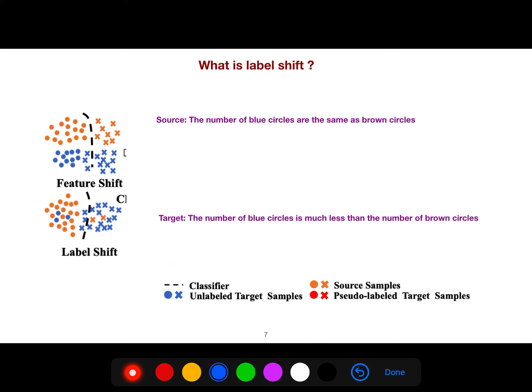But what is label shift? For example, in the source, the number of blue circles are the same as brown circles. But in the target, the number of blue circles is much less than the number of brown circles. Not only this, because also in the target, the label is totally changed. So it's a label shift.